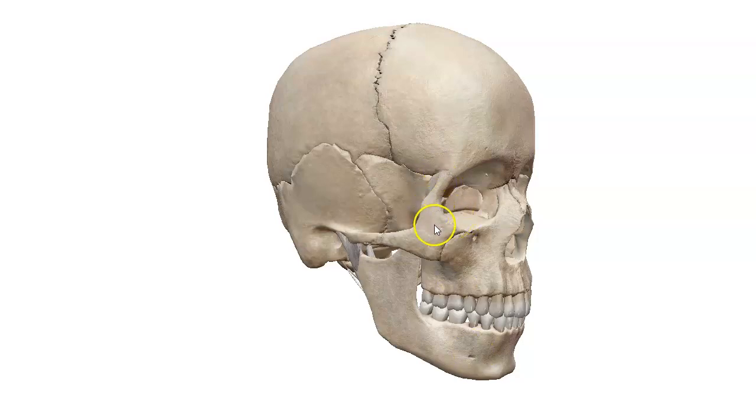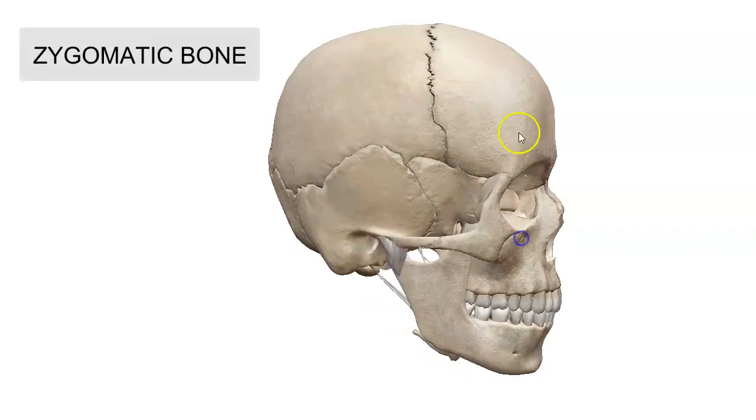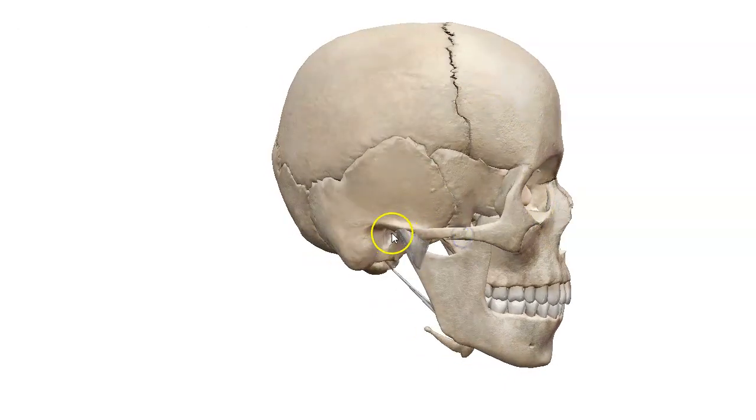Turning the skull a little bit to the side, we see the cheekbone, also known as a zygomatic bone. From this angle we can see the ear canal right here, called the external auditory meatus or external acoustic canal.